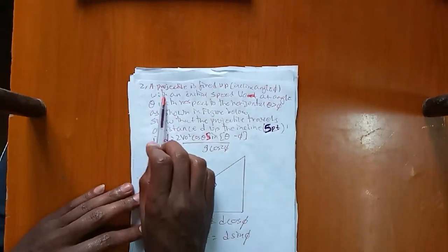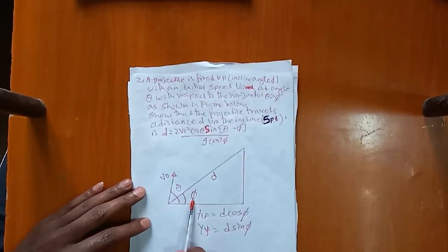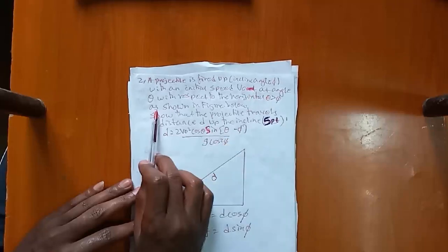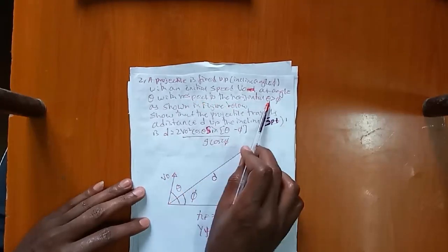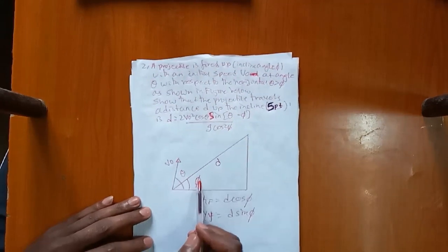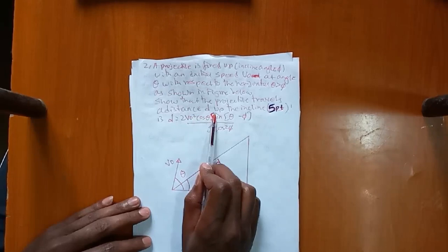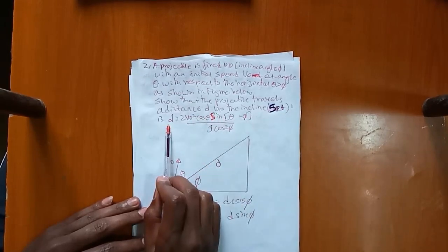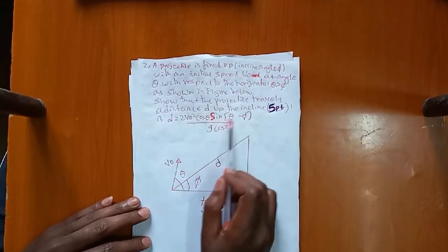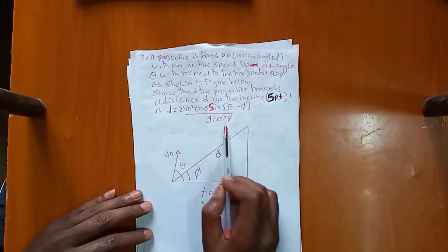The projectile is fired up an inclined plane at angle φ. This is the initial speed of v-naught at angle theta with respect to the horizontal, where theta is greater than φ. The projectile travels a distance d up the incline. d is equal to 2v-naught squared cosθ·sin(θ - φ) over g·cos²φ.